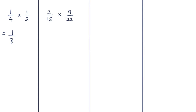The left hand fraction is actually in its simplest form, and the right hand fraction is also in its lowest form. Now we can check diagonally: we've got two and 22 — there's a common factor of two. Two goes into two once, and two goes into 22 eleven times. Checking 15 and nine, there's a common factor of three: three goes into nine three times and three goes into 15 five times.